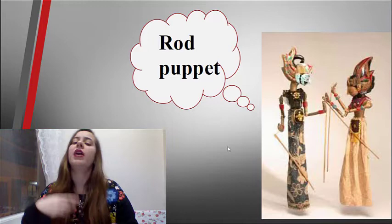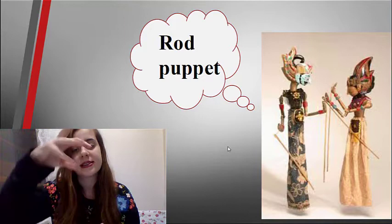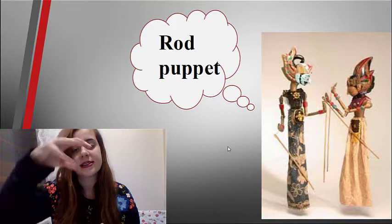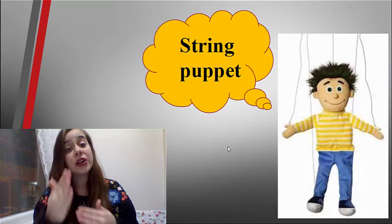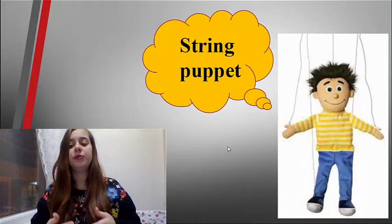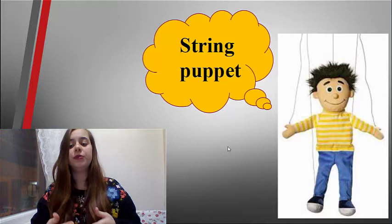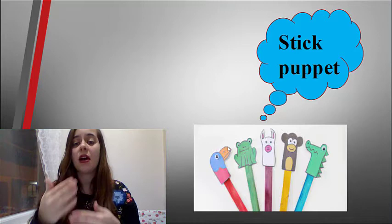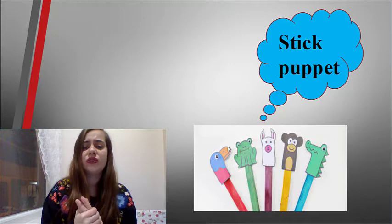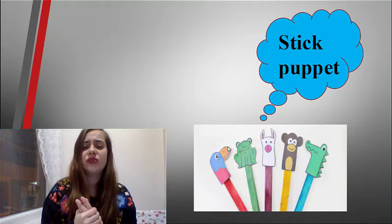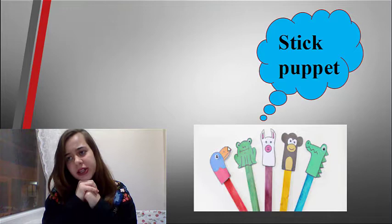Rod puppets: they are operated from below the stage by a combination of rods and strings. String or marionette puppets: these consist of puppets with hinged body parts which are controlled by nine strings that produce the required movements. Stick puppets: painted cardboard or paper cutouts attached to sticks, manipulated by the teacher and students by hiding behind a screen so that only the puppets are visible to the class.